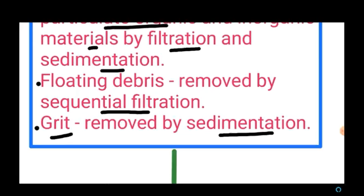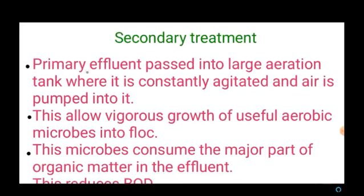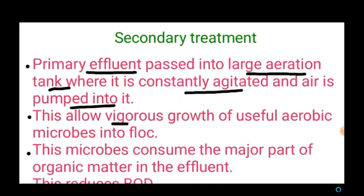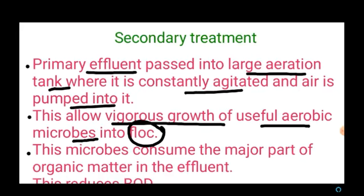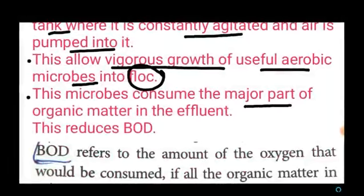After primary treatment, the primary effluent is passed to secondary treatment. During secondary treatment, the primary effluent is passed into a large aeration tank which is constantly agitated and air is pumped into it continuously. This allows vigorous growth of useful aerobic microbes — masses of bacteria associated with fungal filaments that form mesh-like structures called flocs. These microbes consume the major part of organic matter in the effluent, thus reducing BOD — biochemical oxygen demand.